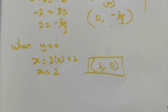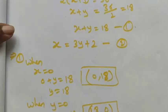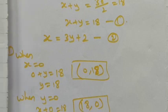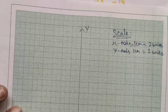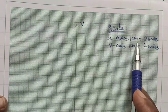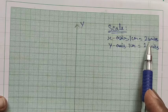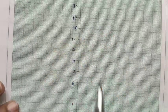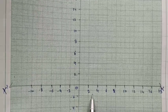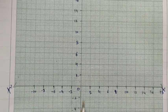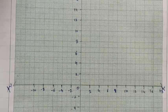Now we go to the graph. Based on the points, we set the scale factor: x-axis — 1 centimeter = 2 units, and y-axis — 1 centimeter = 2 units. So we mark 2, 4, 6, 8 on both axes.